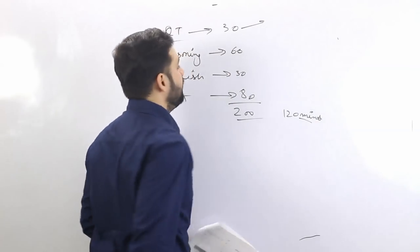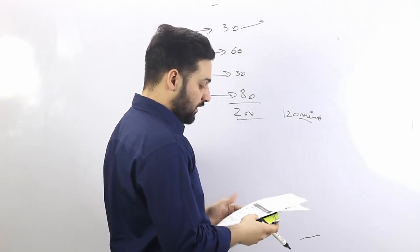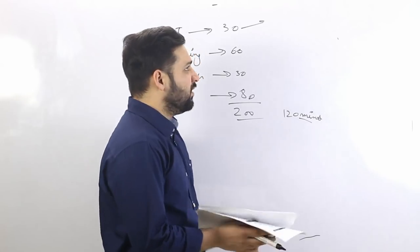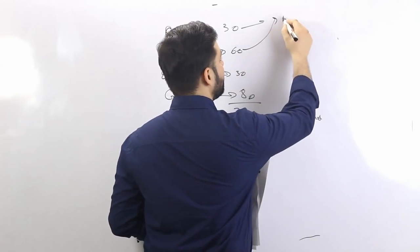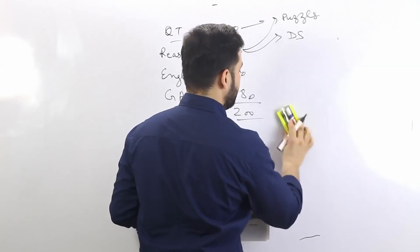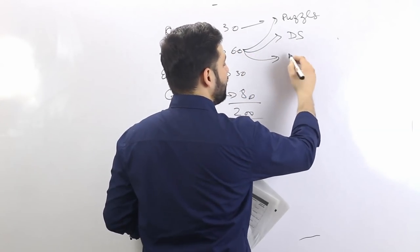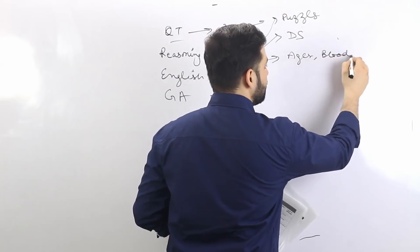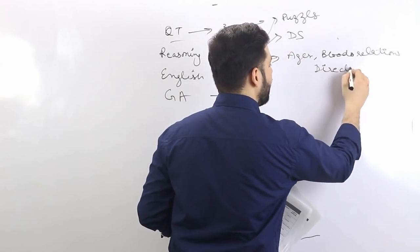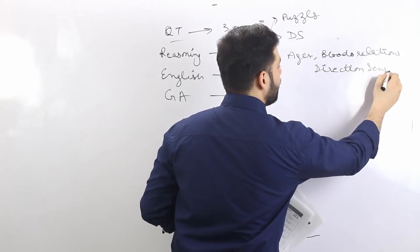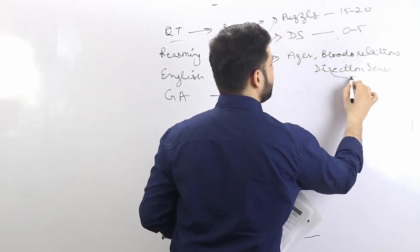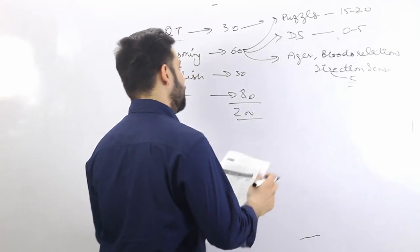Let's talk about the reasoning part. There are 60 questions asked in reasoning. There will be questions from puzzles, data sufficiency, problems based on ages, blood relations, direction sense test — about four to five marks from these topics. Then 15 to 20 marks from puzzles, up to five from direction sense. Then there may be machine input-output, which is a very easy chapter.